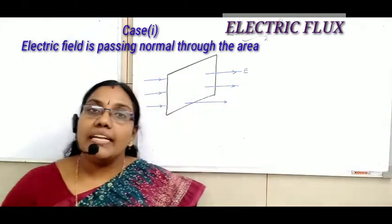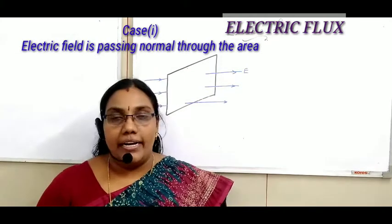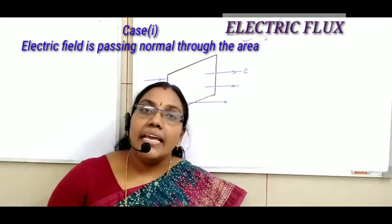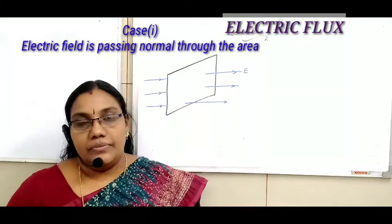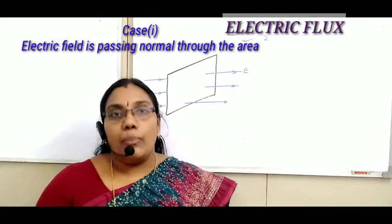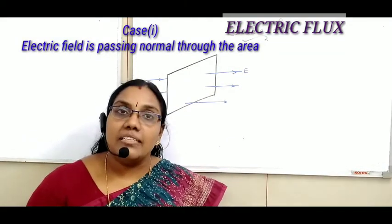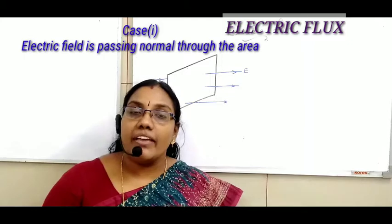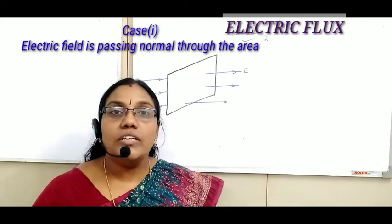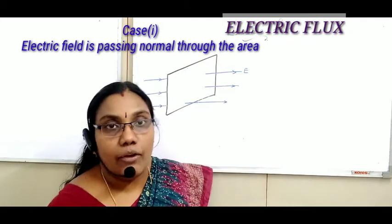Normally we know that area is considered to be a scalar quantity, but in some cases area can be considered as a vector — and that is called the area vector. The direction of area vector is the outward normal.